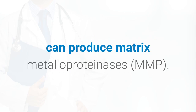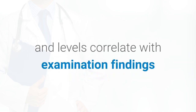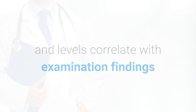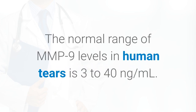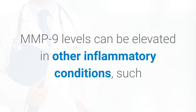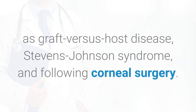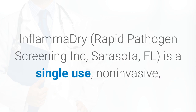Stressed epithelial cells on the ocular surface can produce matrix metalloproteinases (MMP). MMP9 has been shown to be elevated in the tears of patients with dry eye disease, and levels correlate with examination findings in patients with moderate to severe dry eye. The normal range of MMP9 levels in human tears is 3 to 40 nanograms per milliliter. MMP9 levels can also be elevated in other inflammatory conditions such as graft-versus-host disease, Stevens-Johnson syndrome, and following corneal surgery.